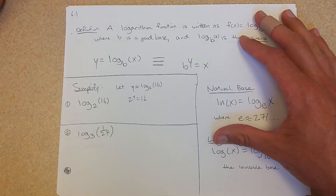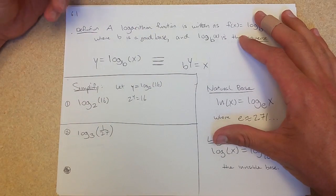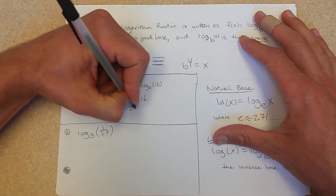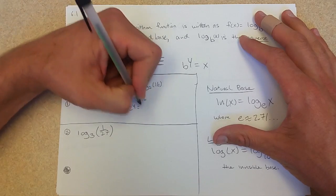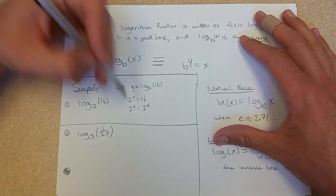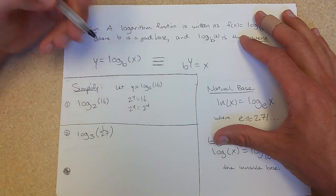Now your exponential brain can probably solve this. If not, just remember 16 is a power of 2. The question is, which power of 2 is it? 2 times 2 times 2 times 2. 2 to the 4th. So y equals 4.